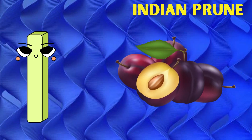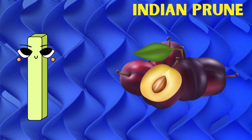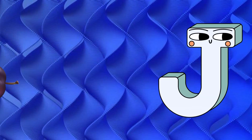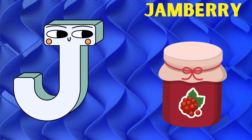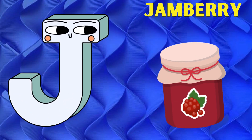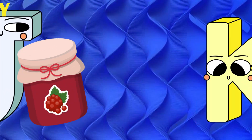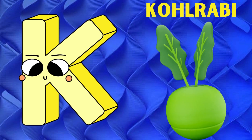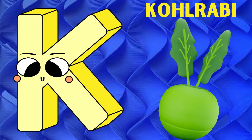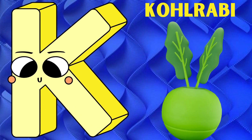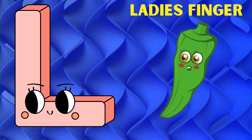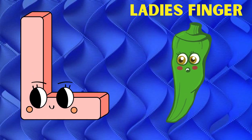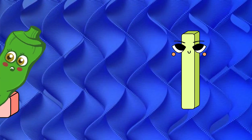I is for Indian prune, Indian prune. J is for jamberry, jamberry. K is for kohlrabi, kohlrabi. L is for lady's finger, lady's finger.